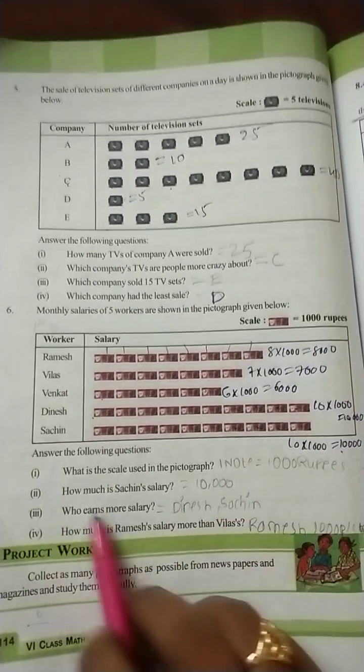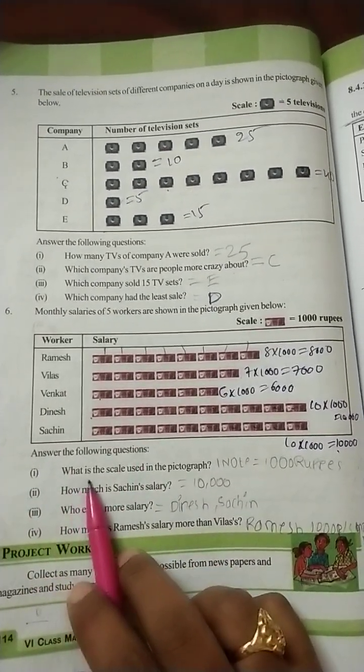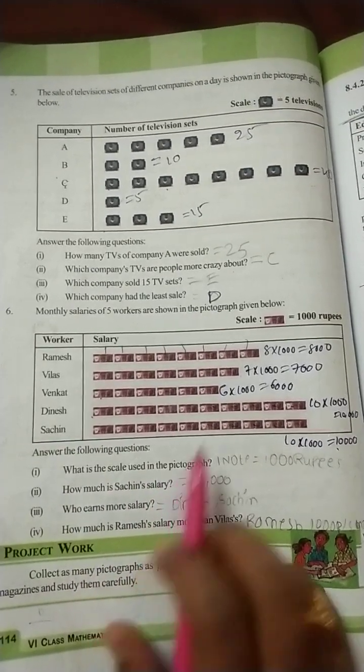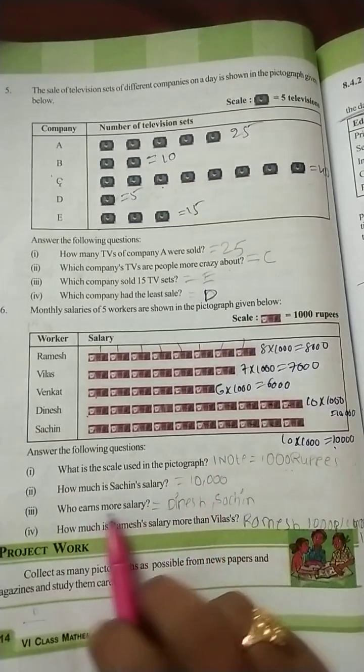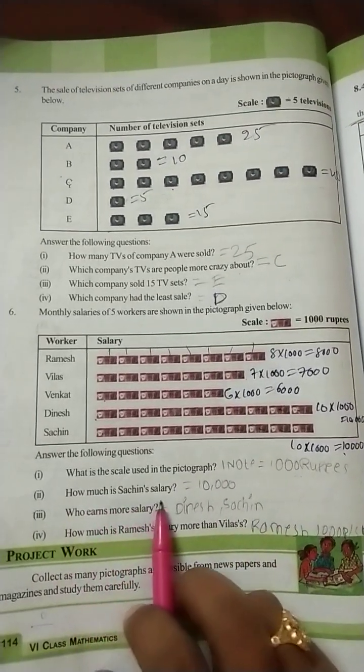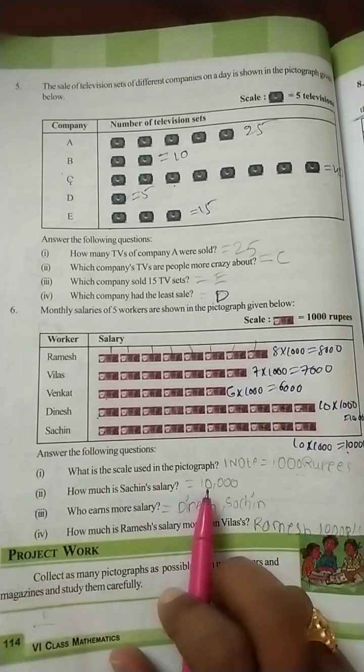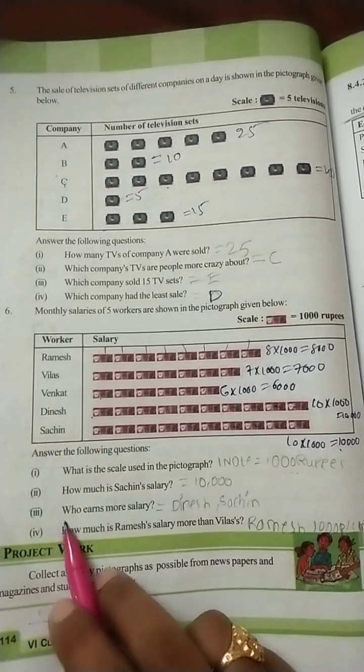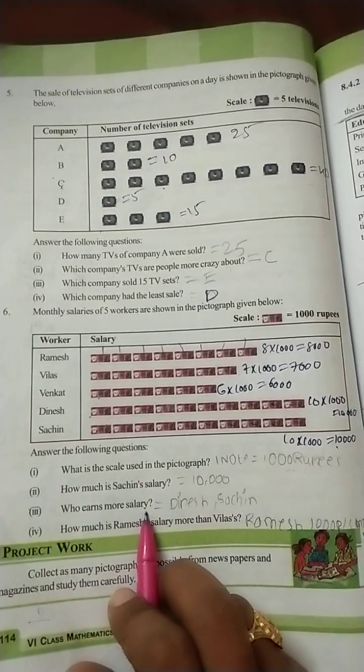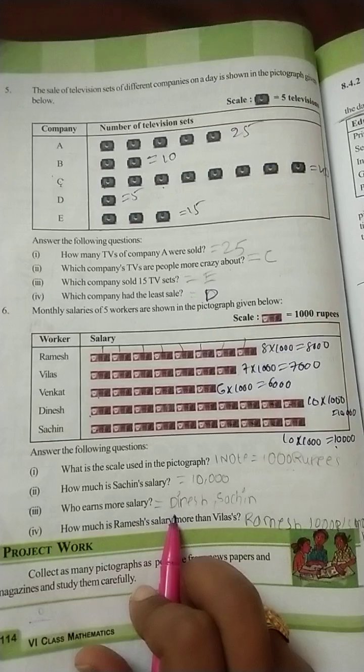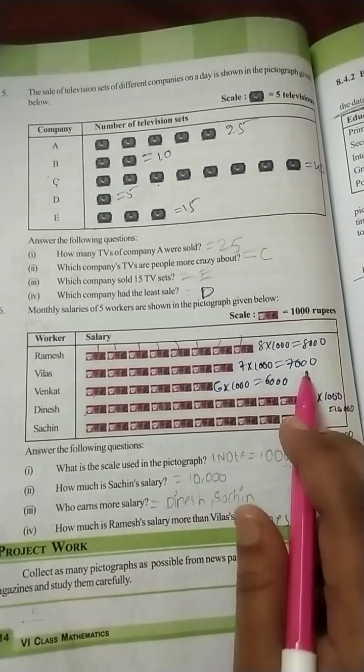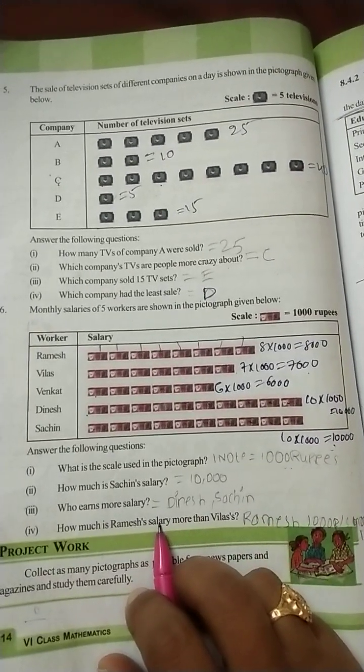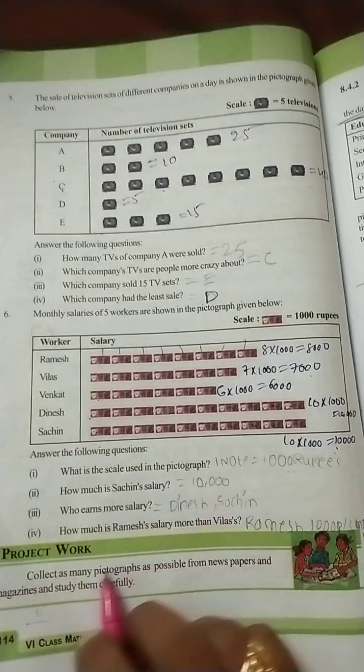Now see. Answer the following questions. What is the scale used in the pictograph? Scale is 1000 rupees per one note. How much is Sachin's salary? Sachin's salary, how much? 10,000. Sachin's salary already we calculated, 10,000. So who earns more salary? More salary means 10,000 only. Dinesh and Sachin both are getting more salary.